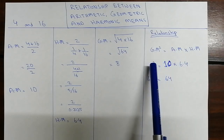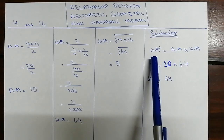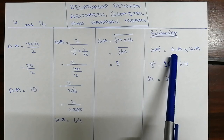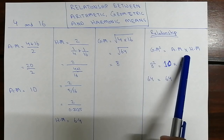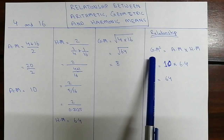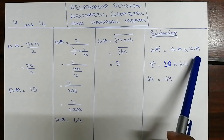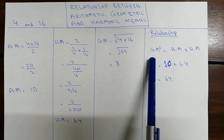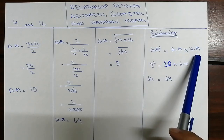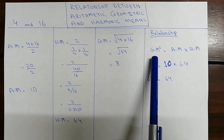Now it's time to show the relationship. The relationship states that the square of the geometric mean should be equal to the arithmetic mean multiplied by the harmonic mean: GM² = AM × HM. We will use our calculated values to prove this.